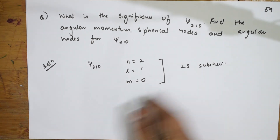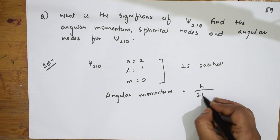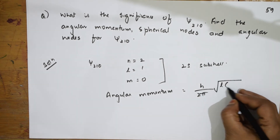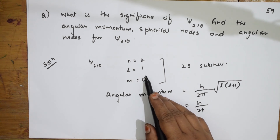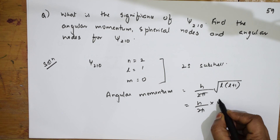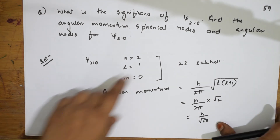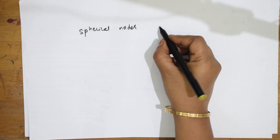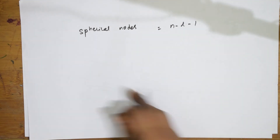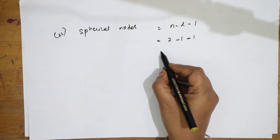To find angular momentum: formula is (h/2π)√(l(l+1)). With l=1, this gives (h/2π)√(1×2) = √2·h/(2π). For spherical nodes: formula is n−l−1 = 2−1−1 = 0 spherical nodes.